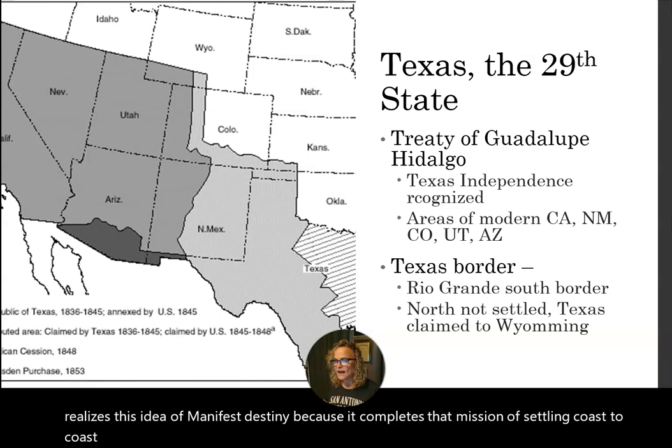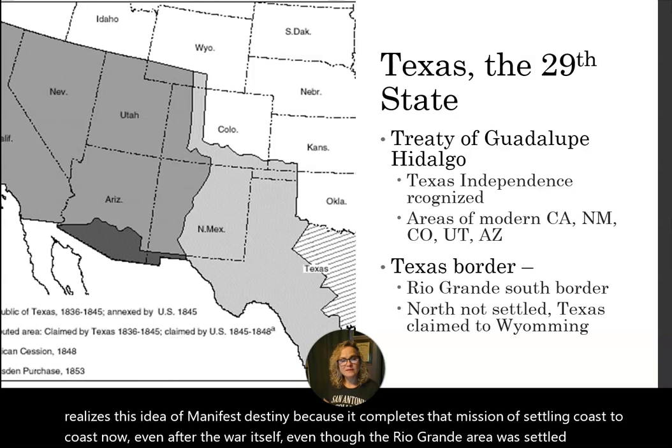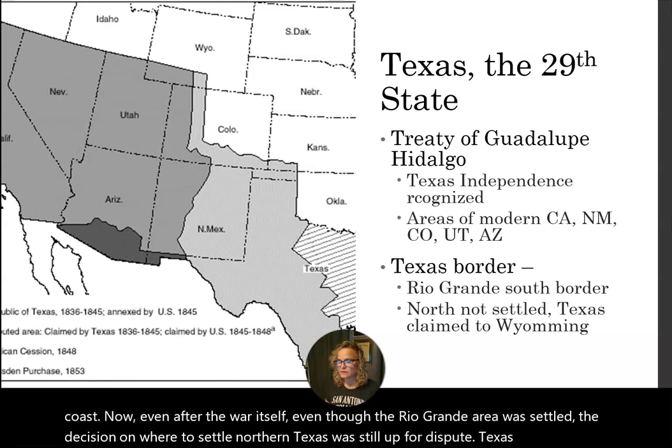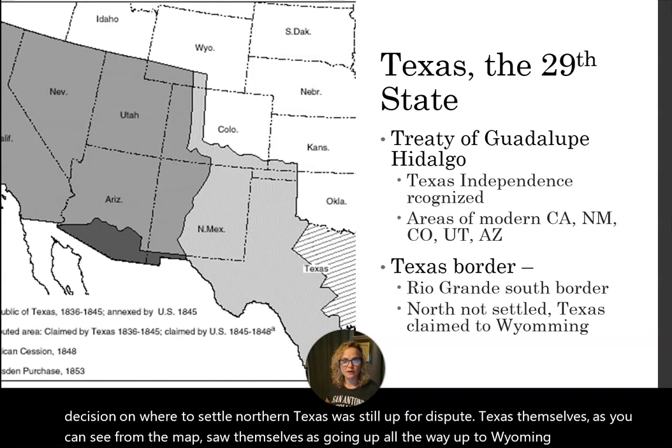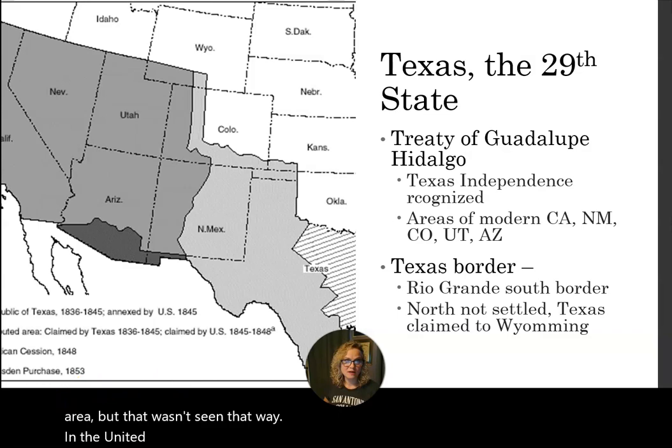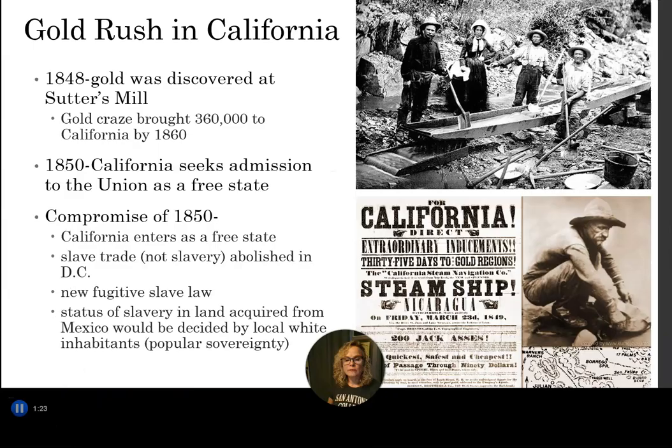Even after the war, even though the Rio Grande area was settled, the decision on where to settle northern Texas was still up for dispute. Texas itself, as you can see from the map, saw itself as going all the way up to Wyoming in its northern area, but that wasn't seen that way in the United States — it was a contested border.